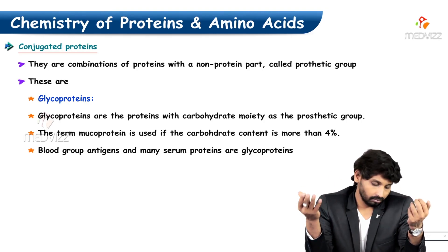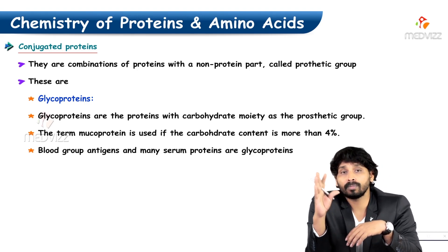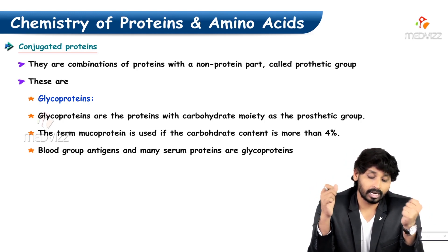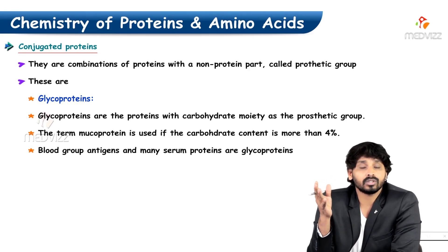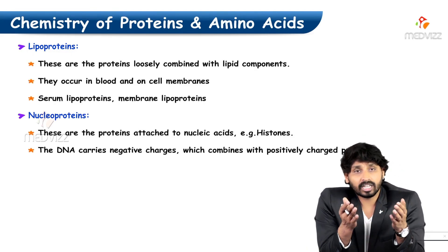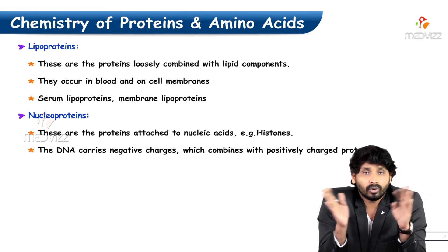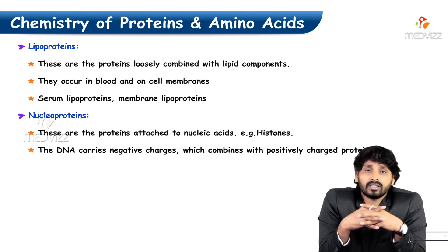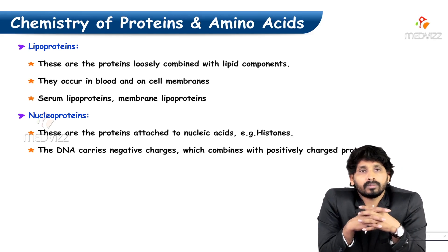Mucoprotein is also used when the carbohydrate content is more than 4%. Blood group antigens and many serum proteins are glycoproteins. Lipoproteins — as the name suggests — are proteins in combination with lipids, loosely combined with the lipid component. They occur in blood and cell membranes. Serum lipoproteins include HDL, LDL, VLDL, and chylomicrons — all are considered lipoproteins.